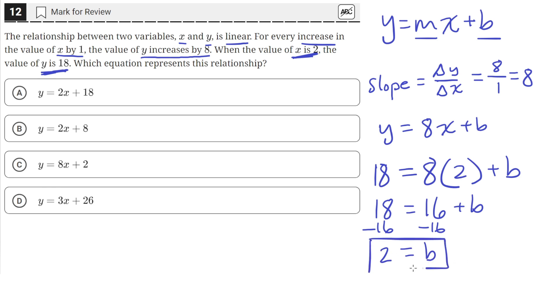So now with this information about the value of b and the slope, we can write the final equation, which is y equals 8x plus 2. So that's answer choice C.